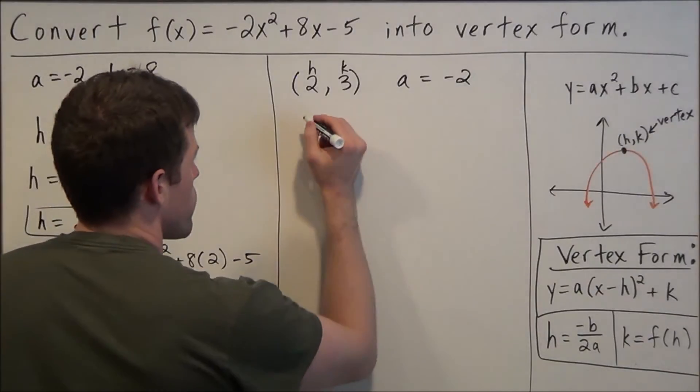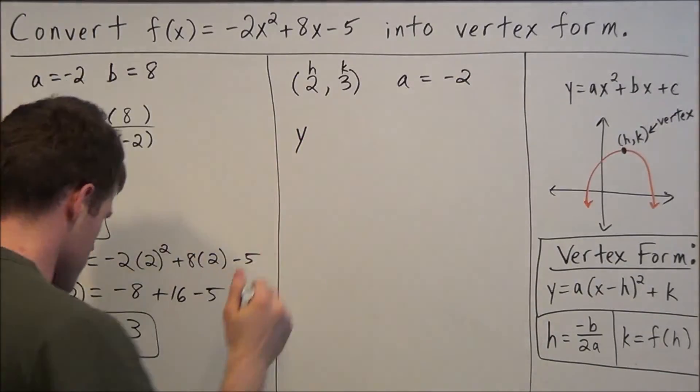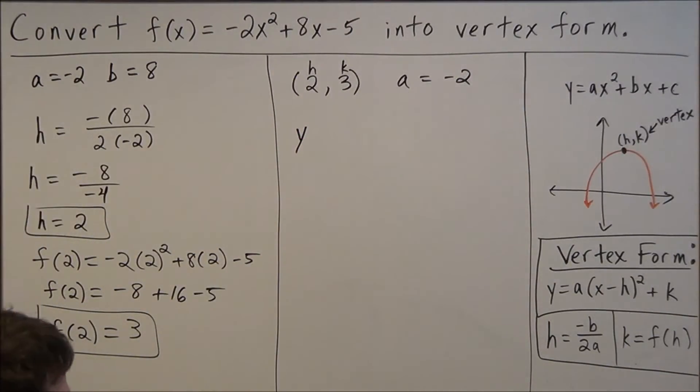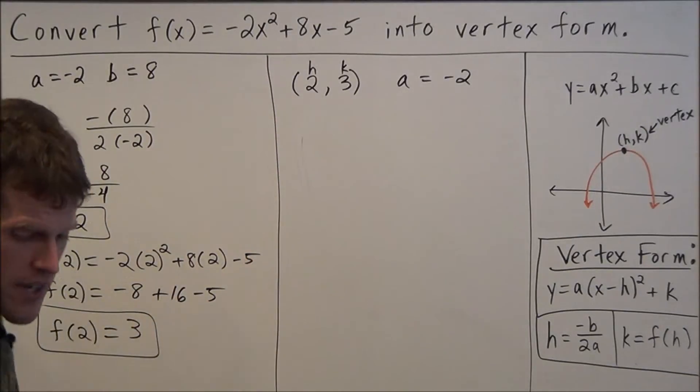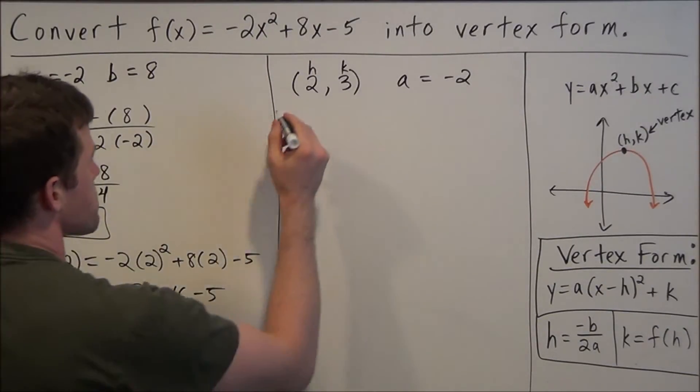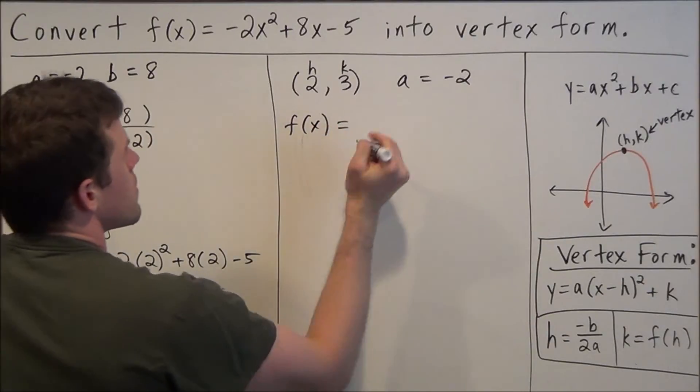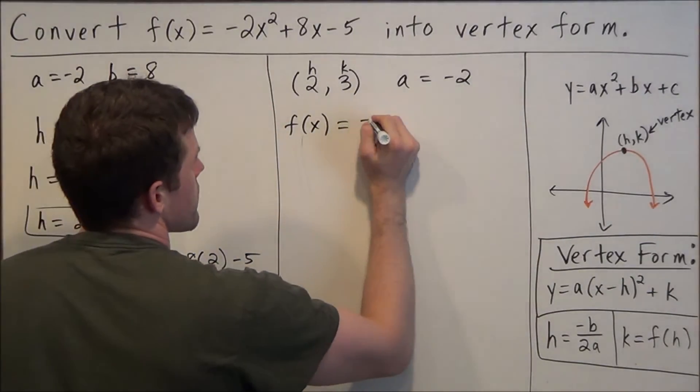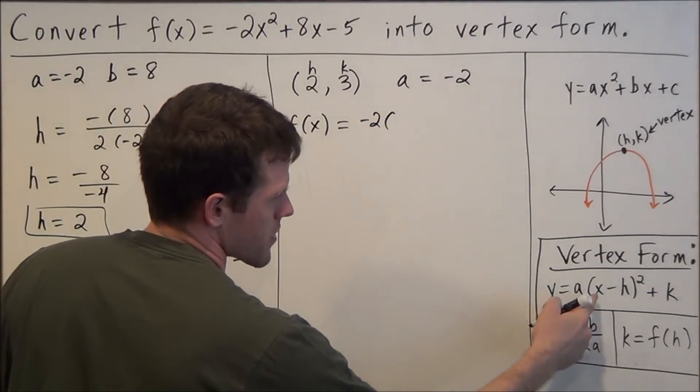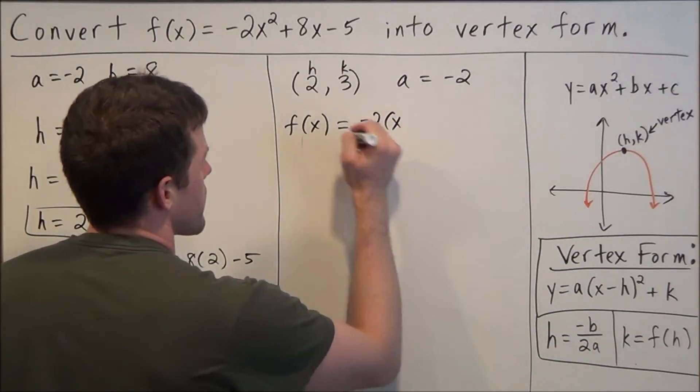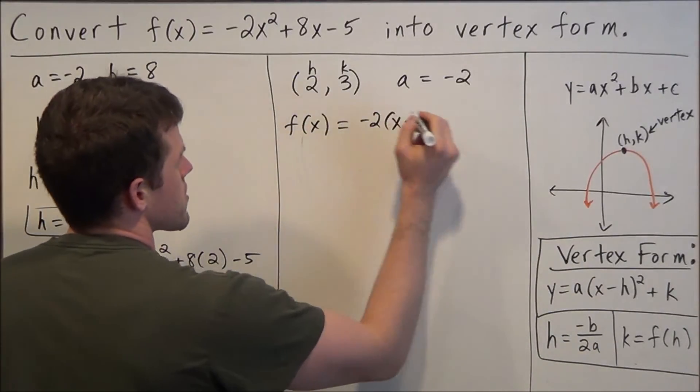So to plug in now we have y equals, or in this case we'll have it match what we have up there, f(x). So we'll say f(x) equals a is negative 2, so we have negative 2, and then we have x minus h squared. So we're going to have x minus h is equal to 2 squared.